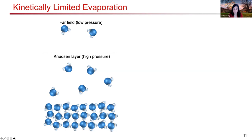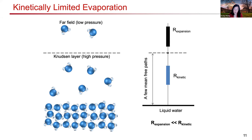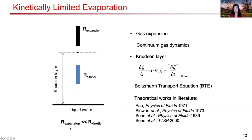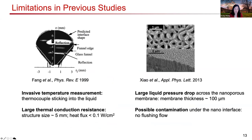In this pure vapor case, the fundamental interfacial transport limit is dictated by kinetics across the highly non-equilibrium gas region — the Knudsen layer — that forms near the evaporating interface. This has been of significant interest, but is very difficult to study experimentally because it is only a few mean-free paths thick. Theoretically, there has been quite a bit of work modeling the gas expansion region with continuum gas dynamics and capturing the Knudsen layer with the Boltzmann transport equation.